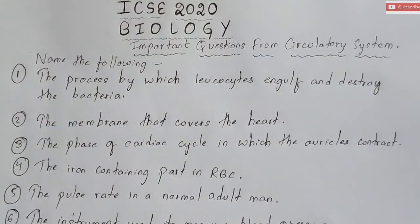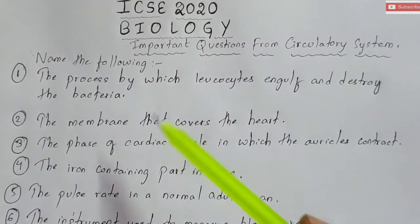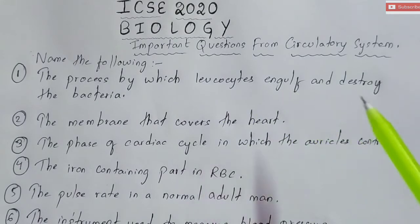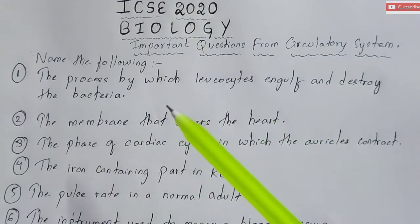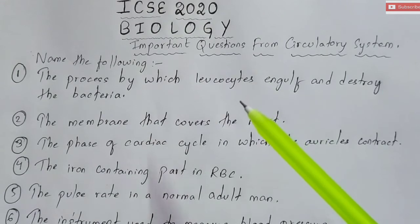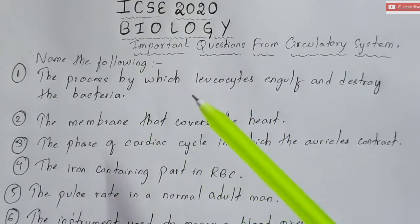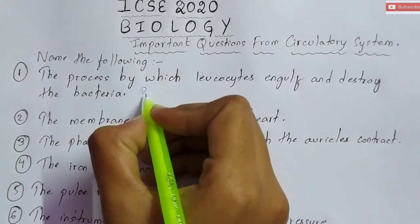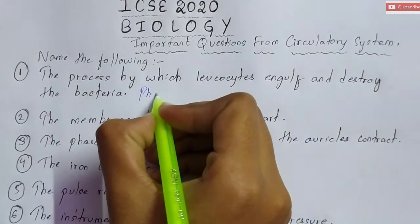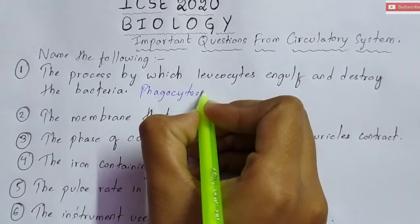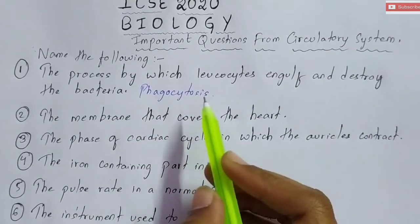The first question is: the process by which leucocytes engulf and destroy the bacteria. Leucocytes are your WBC, that is white blood cells. You have to name the process by which leucocytes engulf and destroy the bacteria. This process is called phagocytosis.